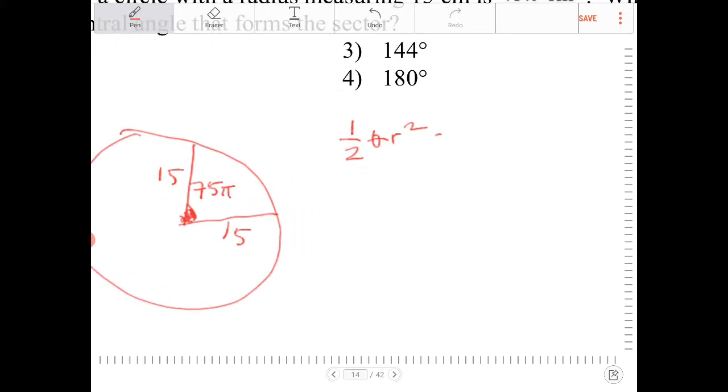So this is equal to 75π. I know r here is 15, so it's one-half theta times 15 squared equals 75π.